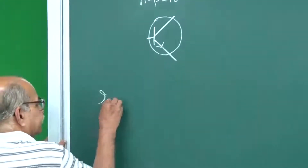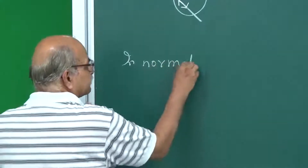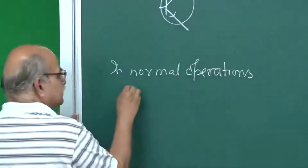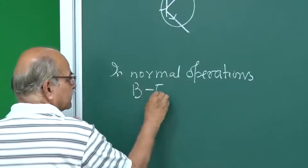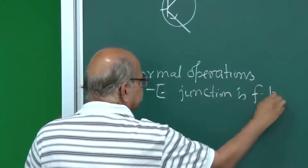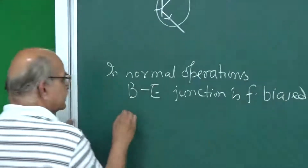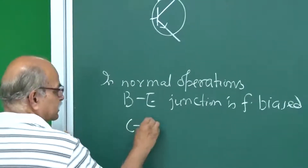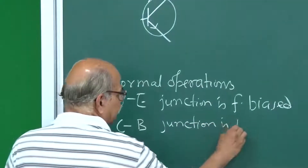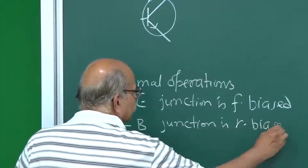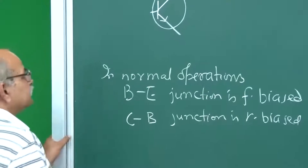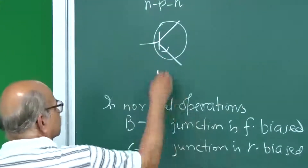In normal operations — this is important — in normal operations, this base-emitter junction is forward biased, whereas this collector-base junction is reverse biased. This is an important thing to remember, and the biasing is according to this description.